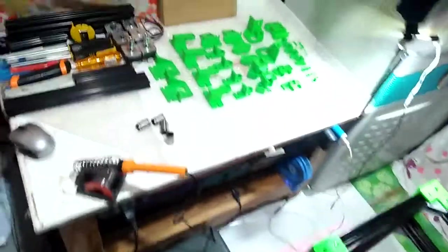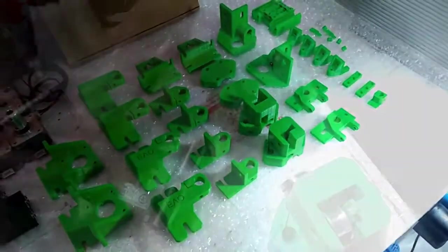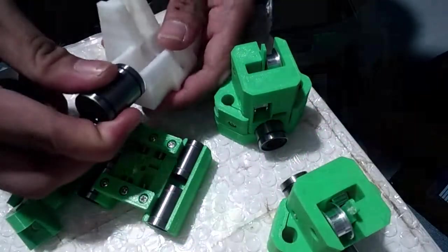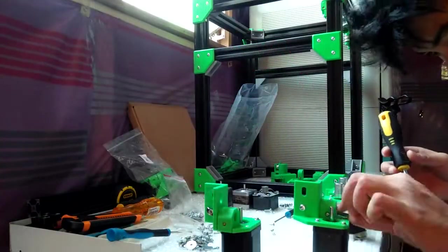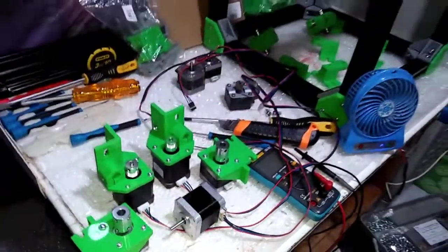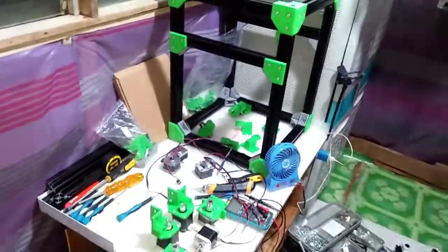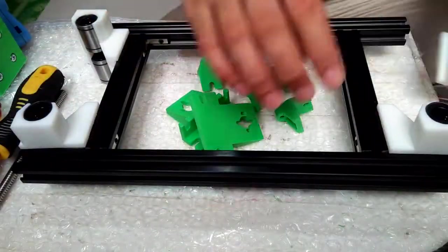So after printing all the needed parts for the machine, I started to pre-assemble small parts like the Linear Motion System and Motor Mounts. Also, the heated bed frame of the 3D printer.